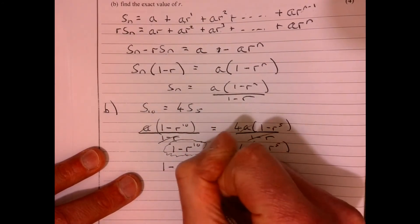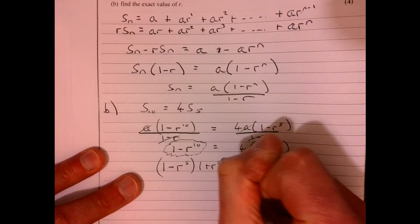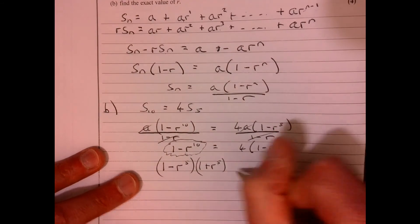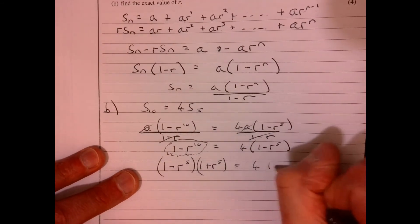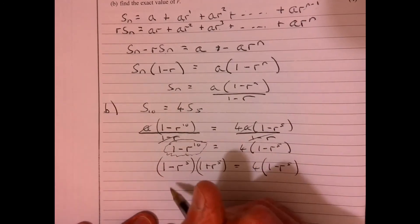1 minus r to the 5, 1 plus r to the 5. It's really annoying when you see it, and then, because the rest of the question, from now on in, is pretty straightforward.